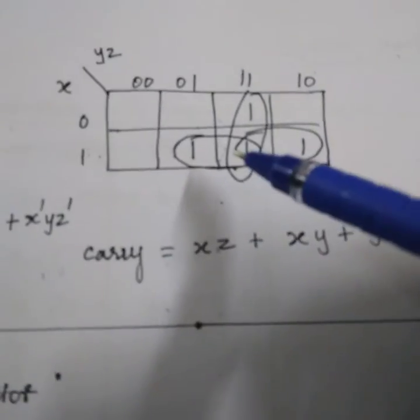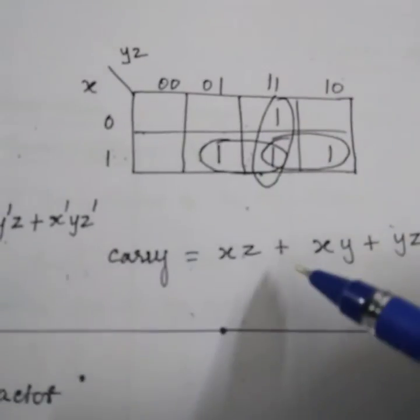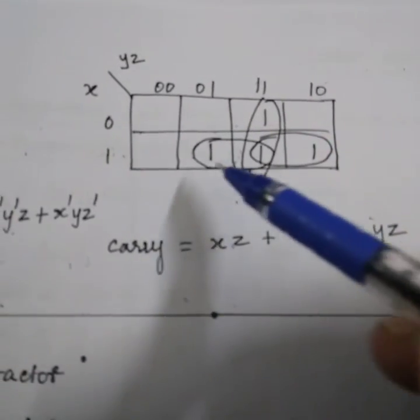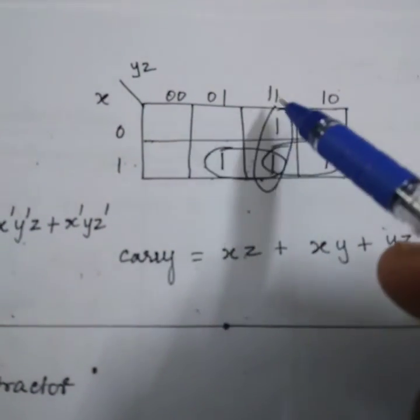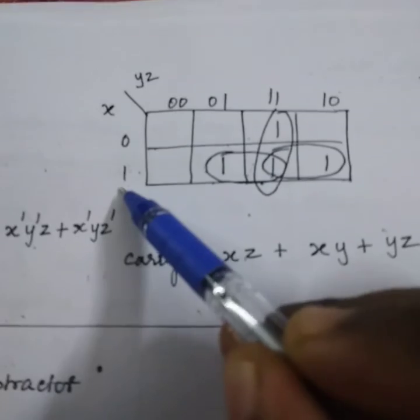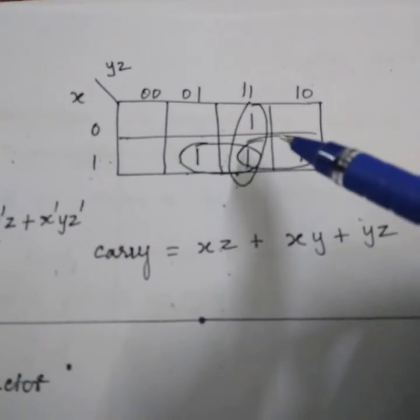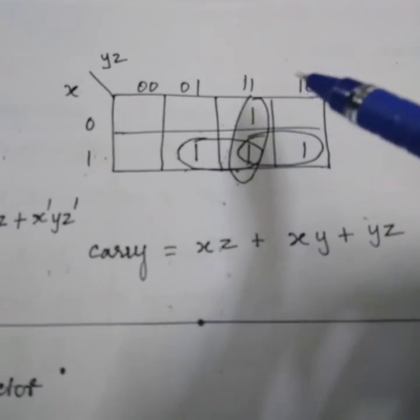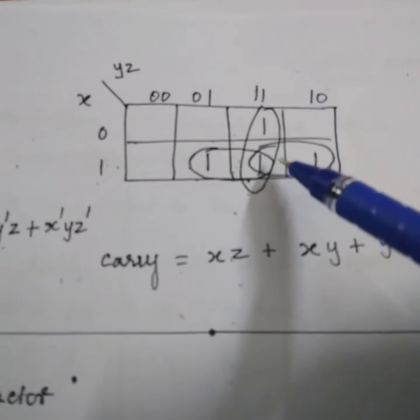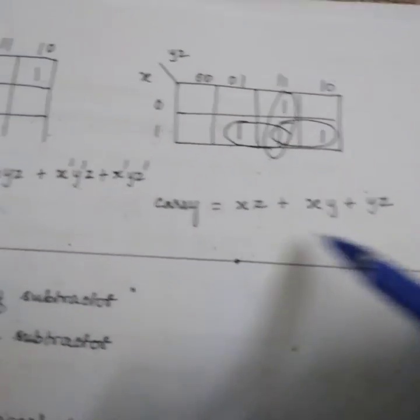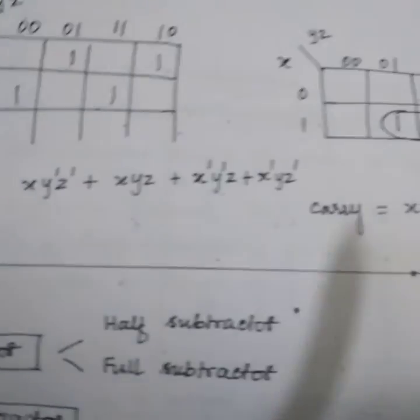Similarly, for carry, we can pair like this. Three pairs can be done. And after pairing, we can simplify the equation. If we consider these two, the common one is z, and this is x, so xz. If we consider this, this will be yz. And if we consider this, it will be xy. So the carry equation will be this. These are the two equations of a full adder circuit.